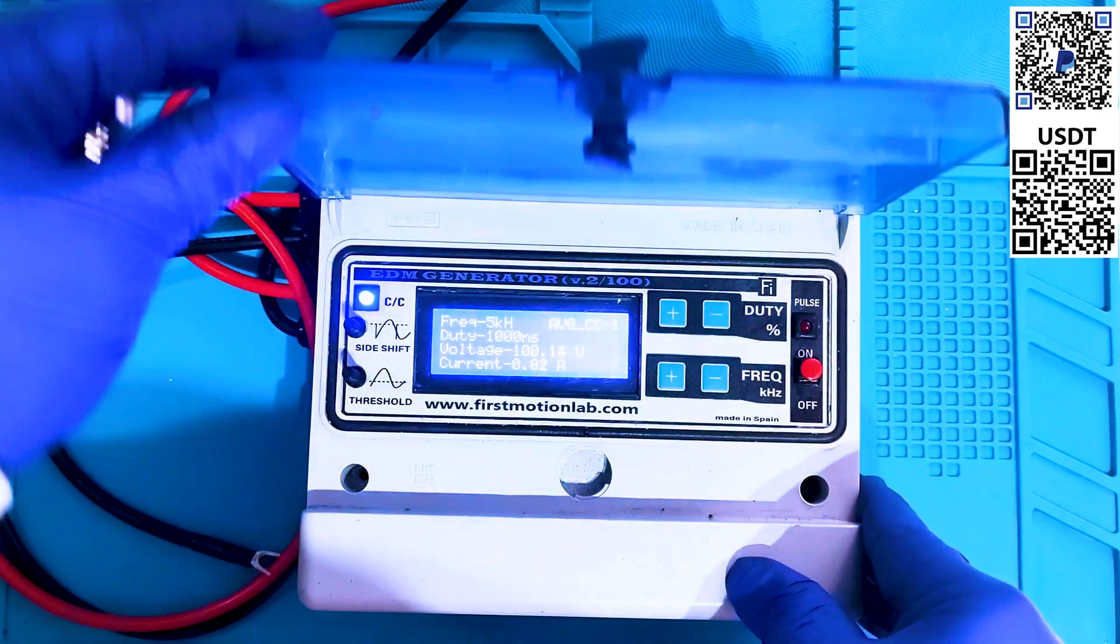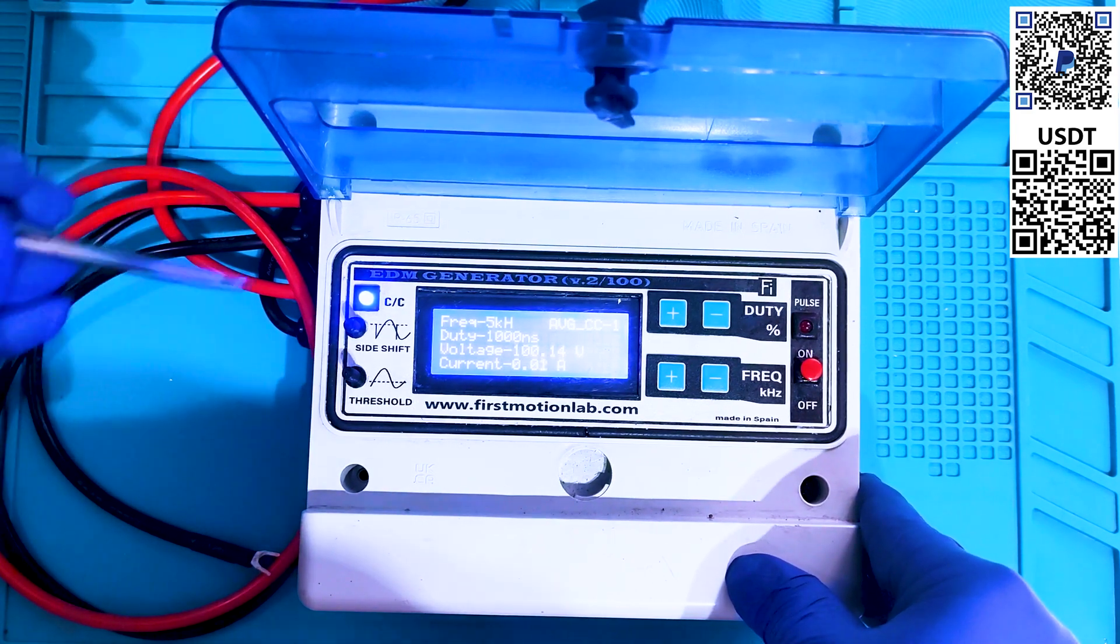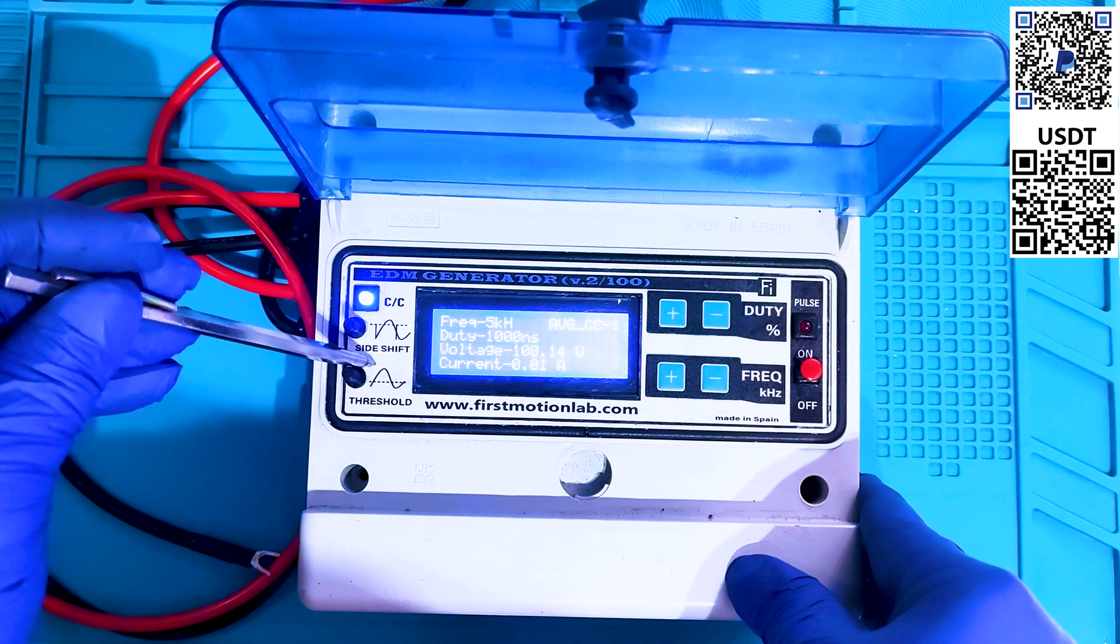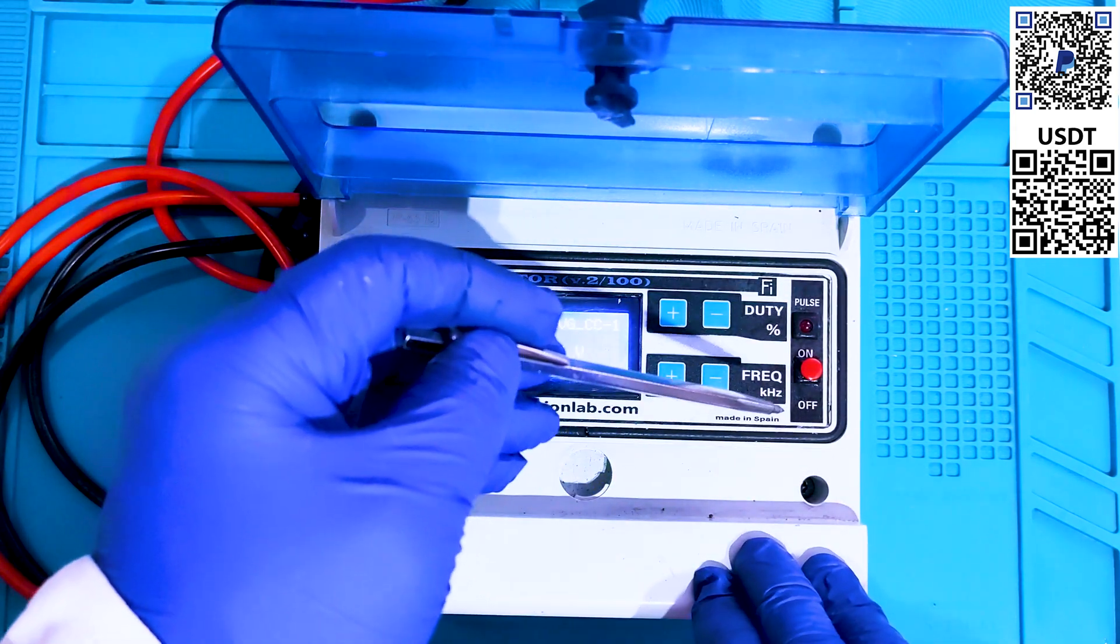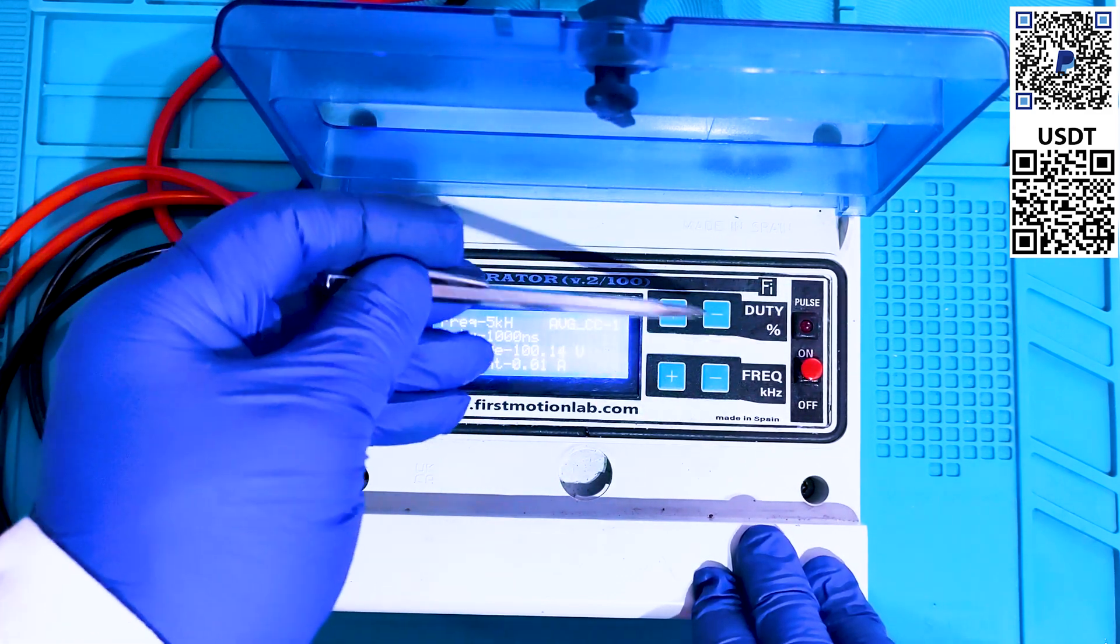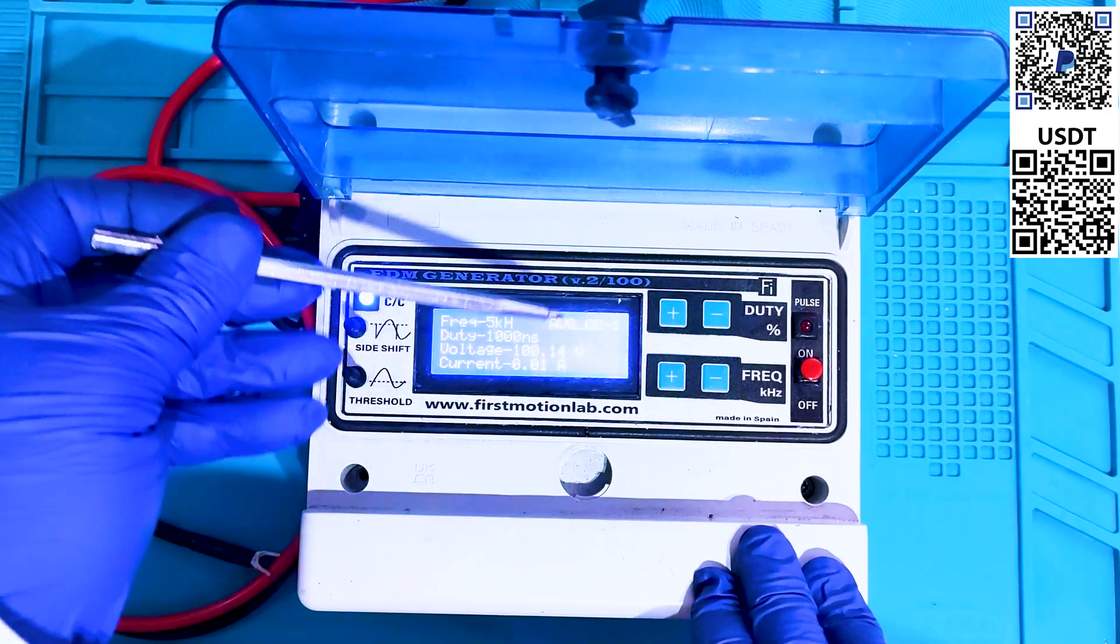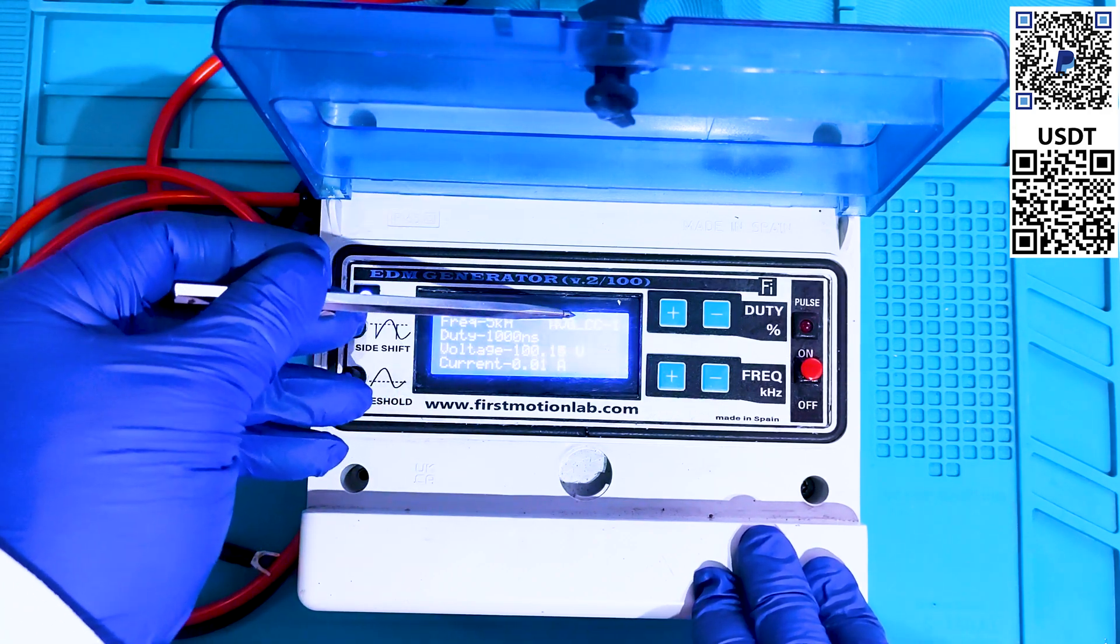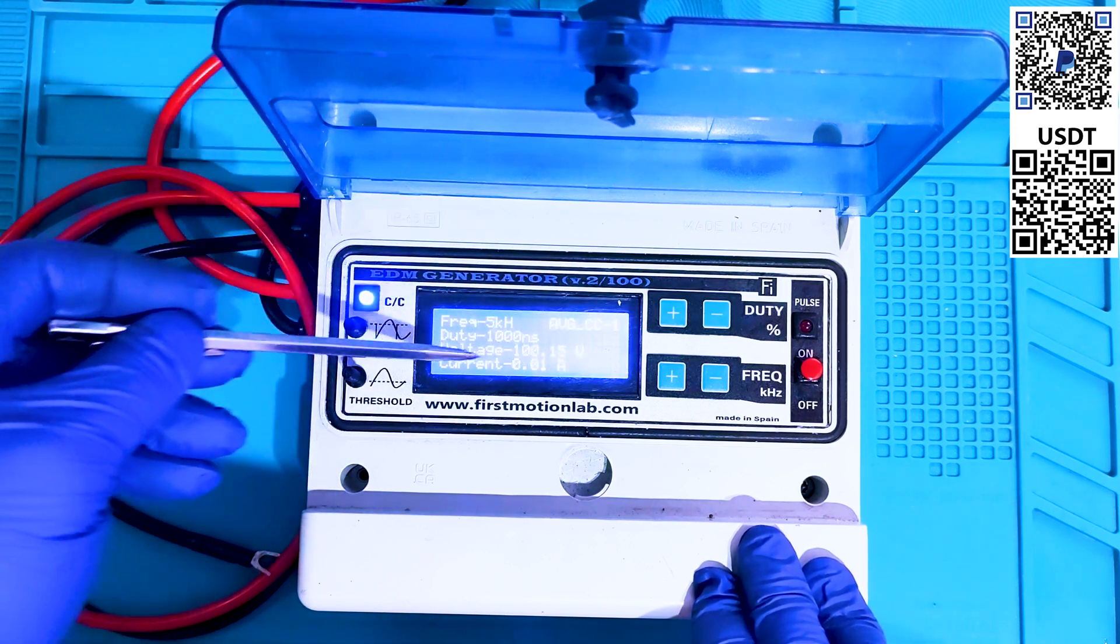This is the pulse current control system, shift and threshold, side shift, buttons to adjust the duty cycle and frequency, buttons to interrupt the output signal. This is the indicator of the average current control generator.